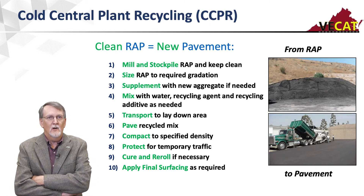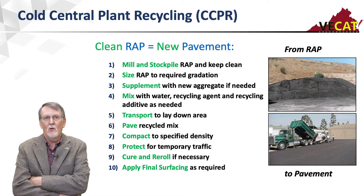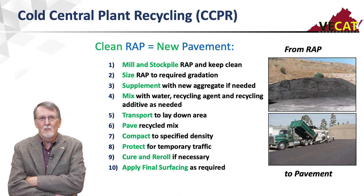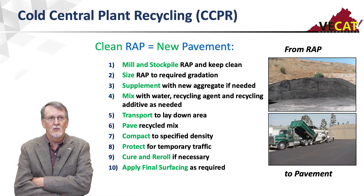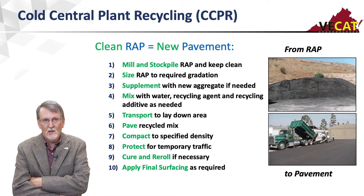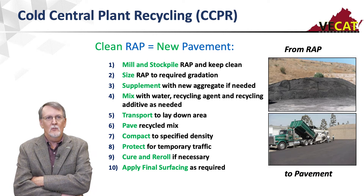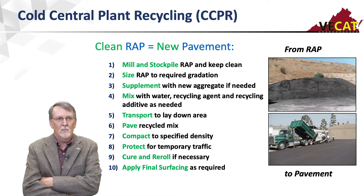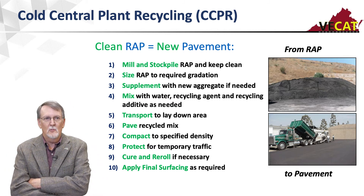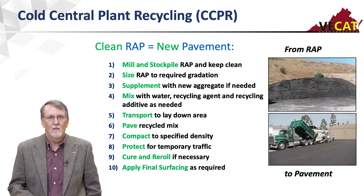The process starts by taking clean RAP and turning it into new pavement. You mill and stockpile the RAP, keeping it clean — it's garbage in, garbage out — using good stockpile management techniques. You'll need to size the RAP to the required gradation, and if the stockpile has been sitting a while it may need to be crushed. You can improve the gradation with new aggregate. The mix is mixed with water, a recycling agent, and recycling additives if needed, then hauled to the lay-down area, placed, and compacted. It requires protection from temporary traffic before a wearing surface is applied, may need curing and re-rolling, and requires a surface treatment. It goes down at high air voids — 8 to 14 percent is not unusual since it's placed cold.